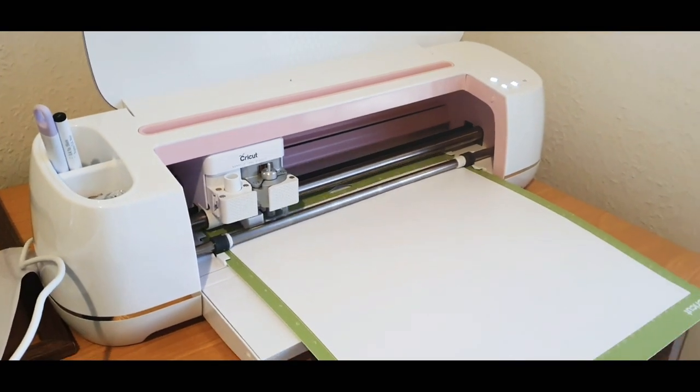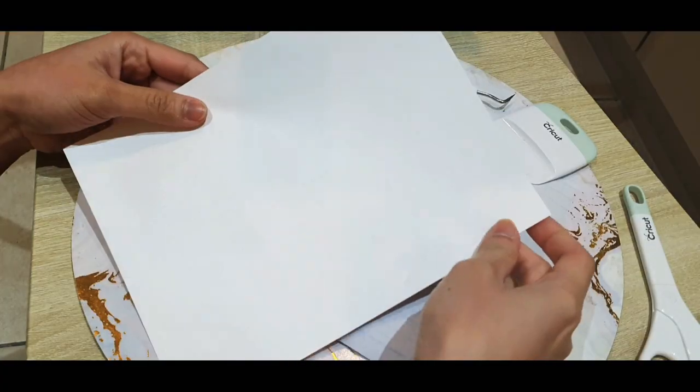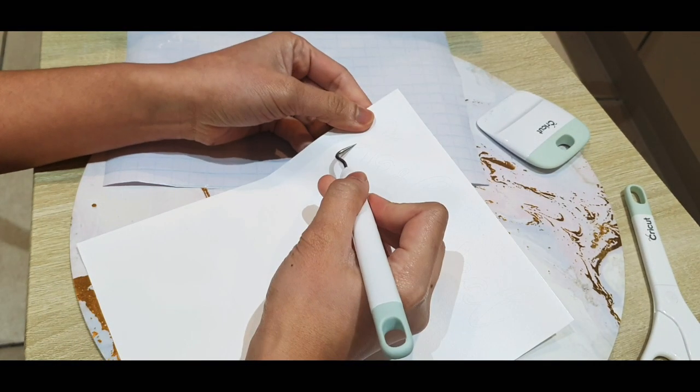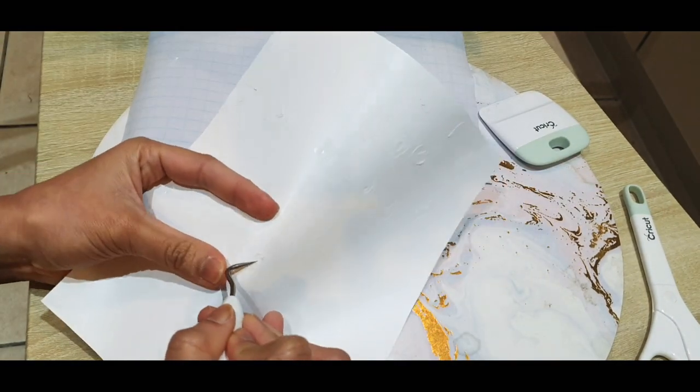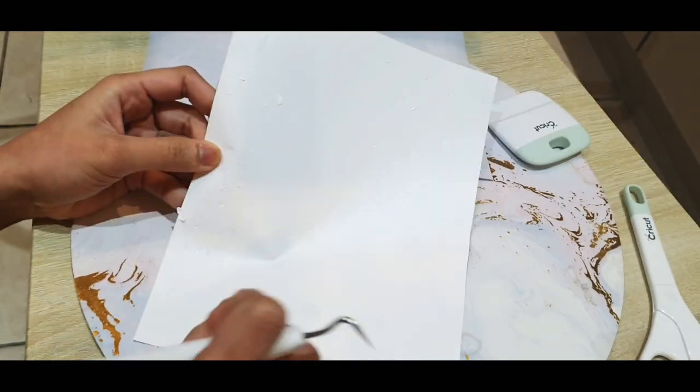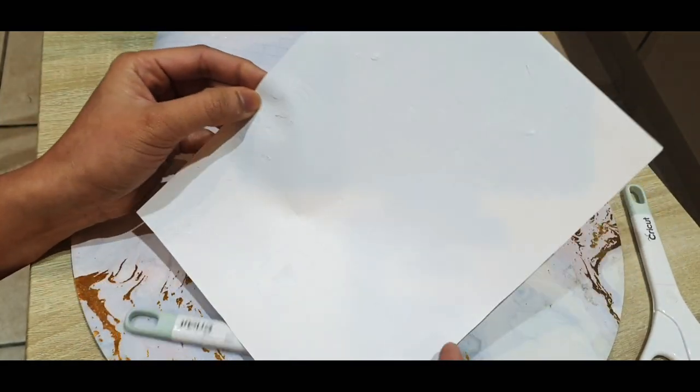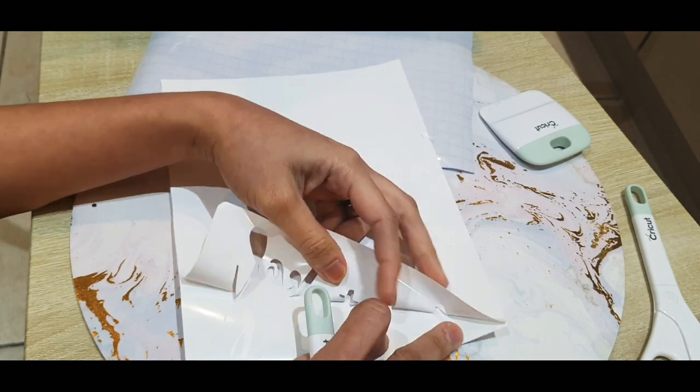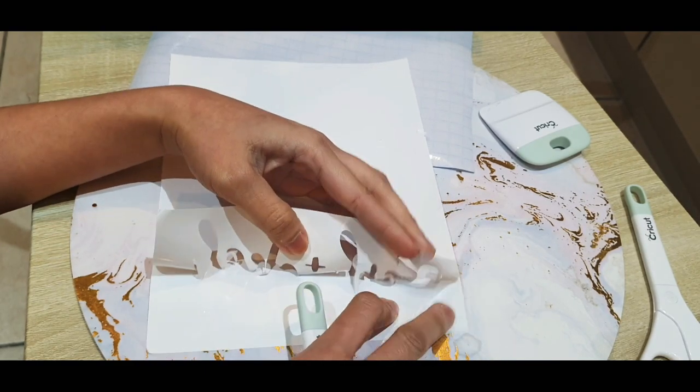And now for my favorite part, you can start by weeding your vinyl sheet, making sure that everything is clean and tidy before you use your transfer tape.